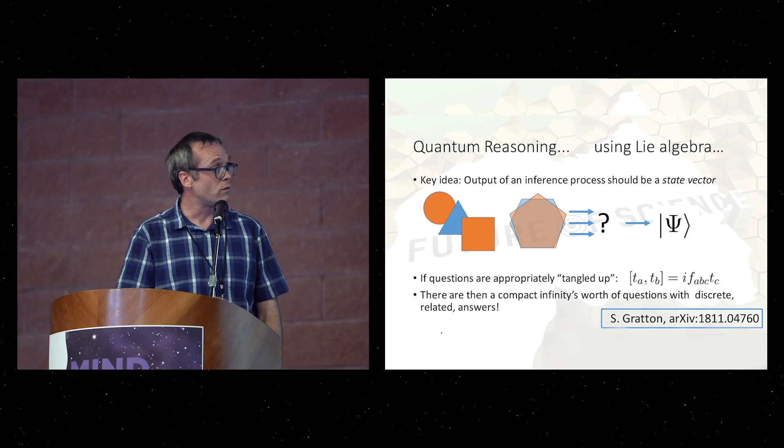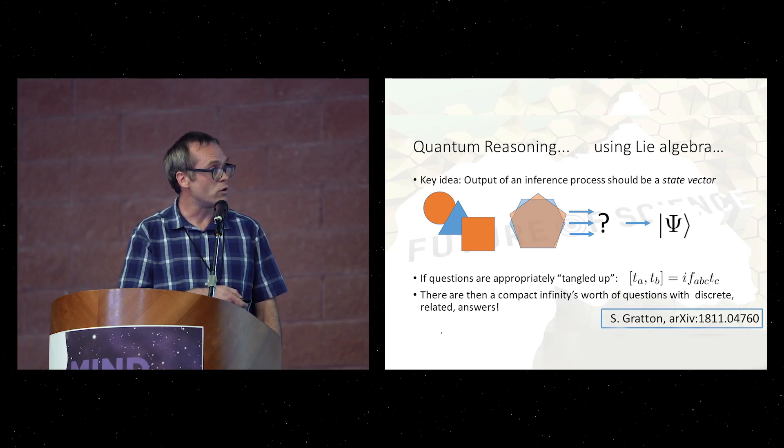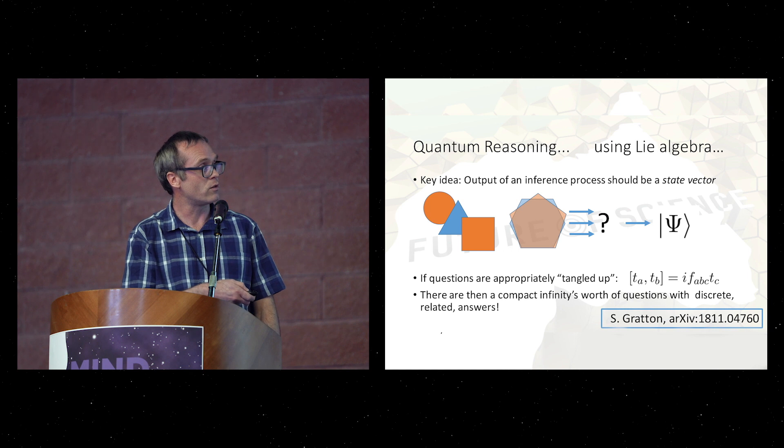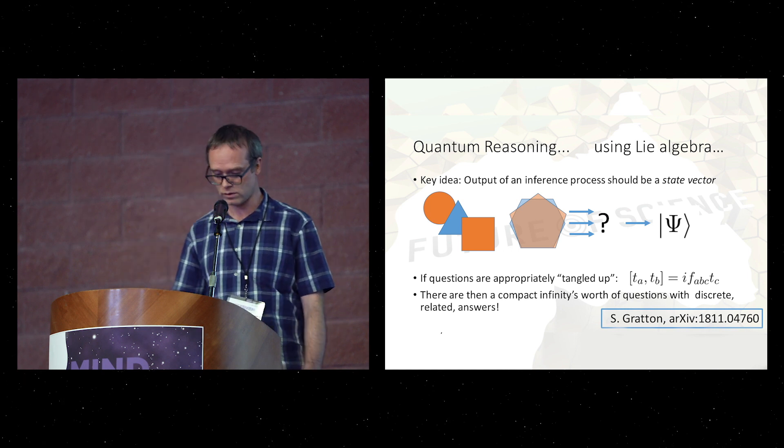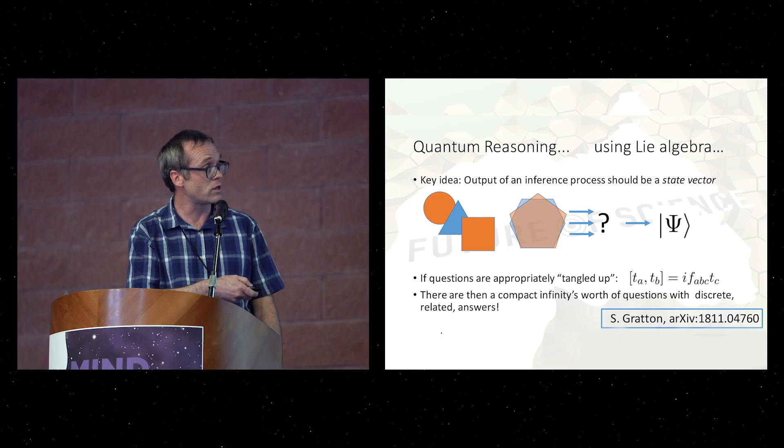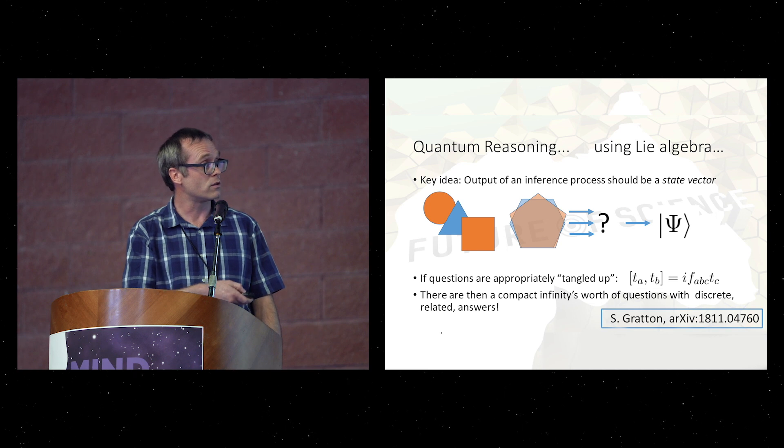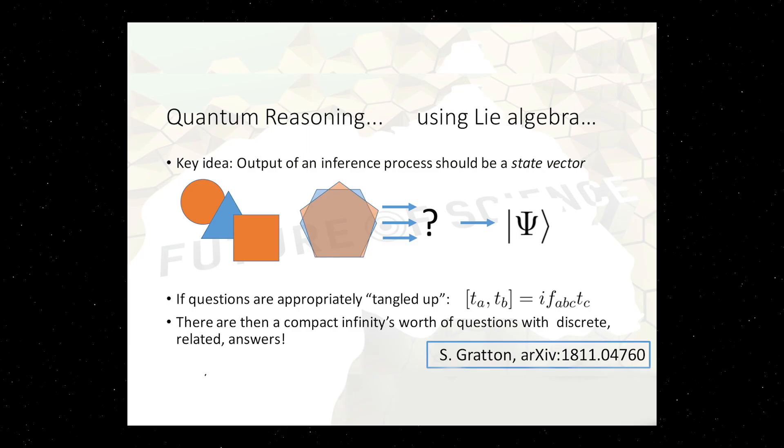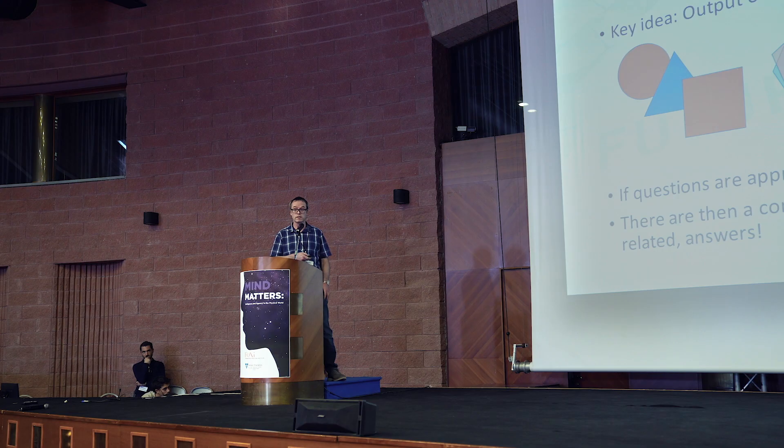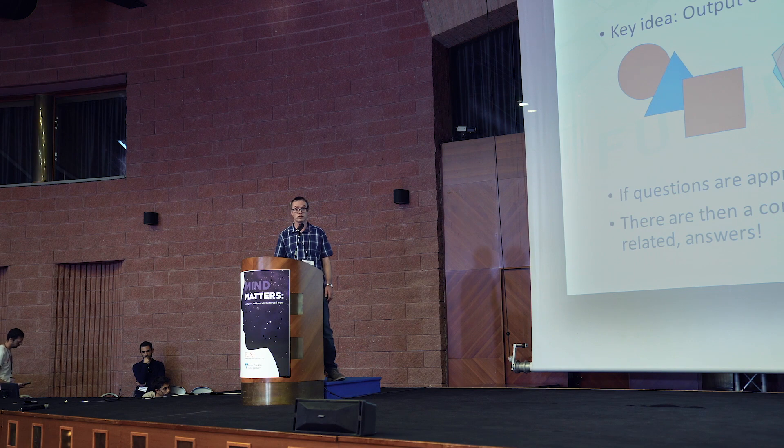The reason it becomes interesting is if you consider your different questions, say you denote them by t, to not commute. And if you choose your questions to basically become a representation of a Lie algebra, so basically the commutator of two is a sum over the third, where these coefficients satisfy certain restrictions, then everything folds together very nicely. You get finite dimensional matrices, so you get finite sets of eigenvalues out, and basically a compact infinity's worth of related questions you can ask.